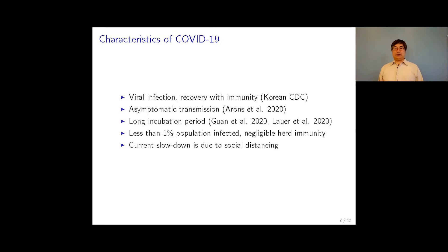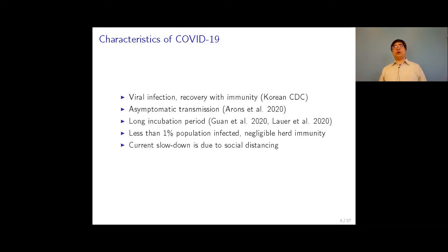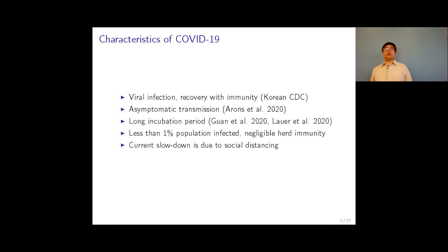What do we know about COVID-19? It's a viral infection caused by a SARS-like virus. People get infected, wait a few days before they show symptoms and start to transmit, then they transmit for a while, then recover. Once they recover, they have immunity. Korean CDC data shows people develop very strong immunity after recovery — even if they still test positive, they will not be transmissible. We also know patients can transmit the disease asymptomatically, as shown by research studying nurses in Washington State.